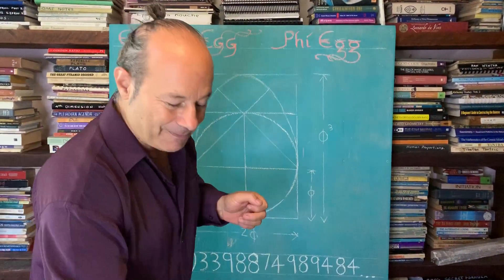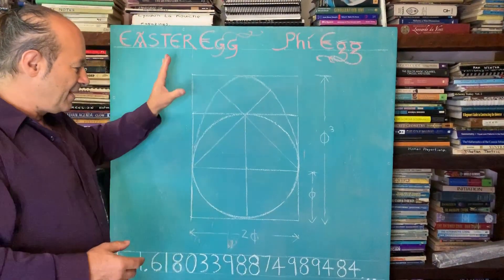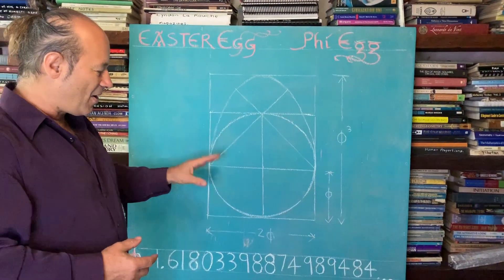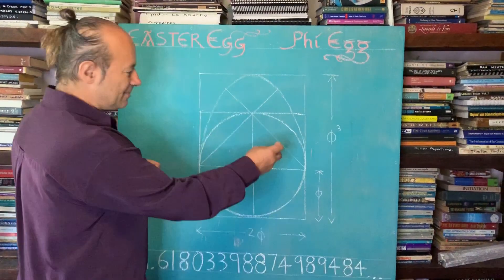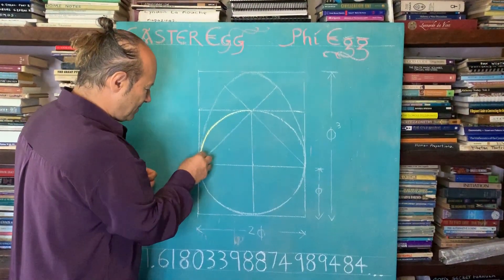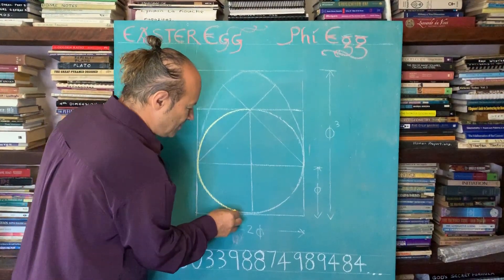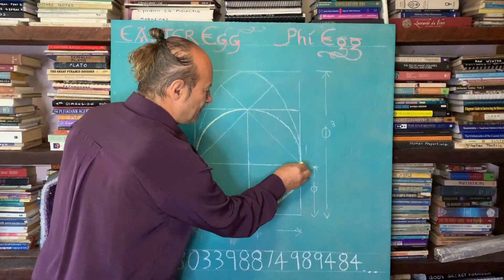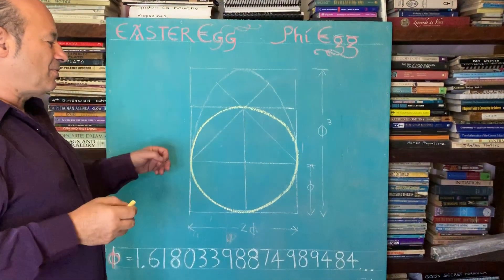So what I'd like to do is start off with the value for Phi. If we start off with a circle, I'm just going to go over the circle in my yellow chalk. You can see we have a circle.